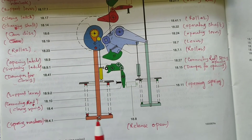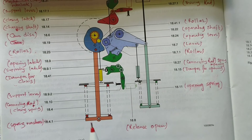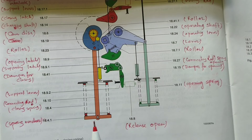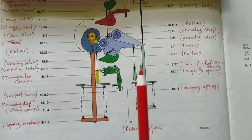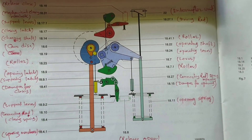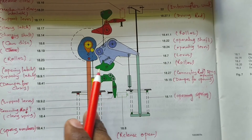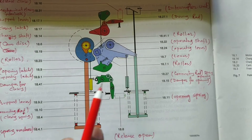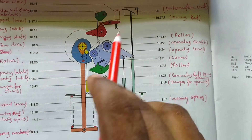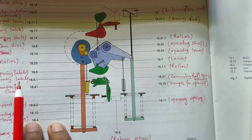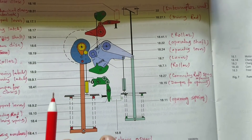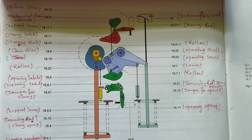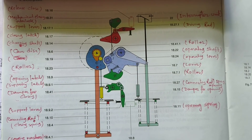This is the closing spring, this is the opening spring, and these are the closing springs and the spring washer. So this is the total function — by help of these materials, the open latch, close latch, this connecting rod, and this spring, the operation of closing and opening inside the breakers are done. This is the mechanical part.